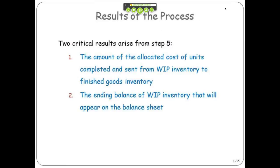So two things have happened here. We've assigned for accounting purposes the amount of cost that's going from work in process to finished goods. And we've assigned an amount that stays in work in process inventory to be finished next period. That's the net effect of these processes.